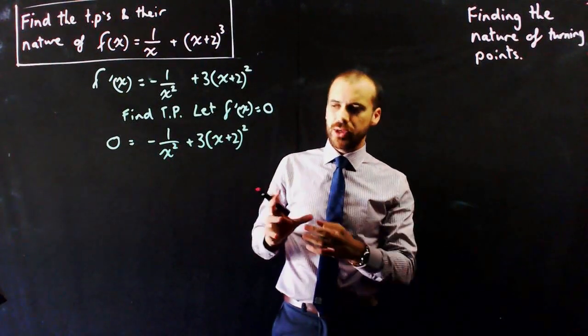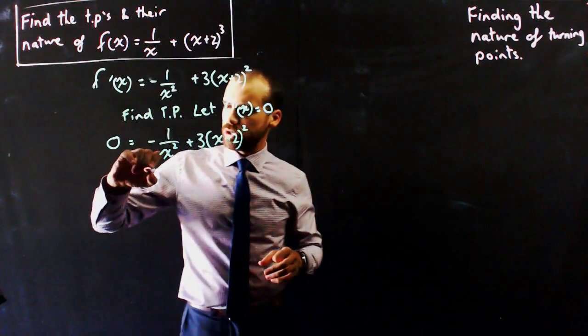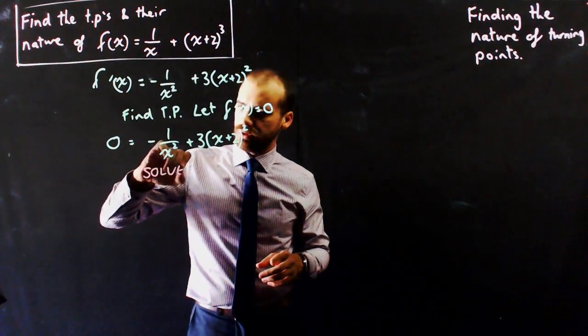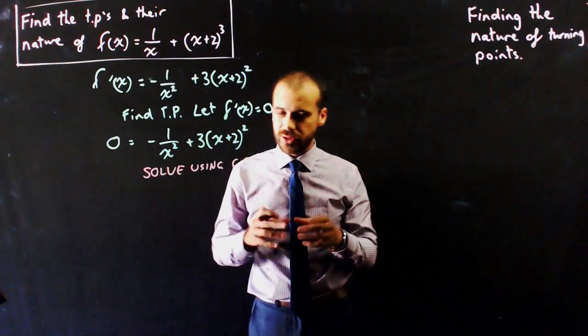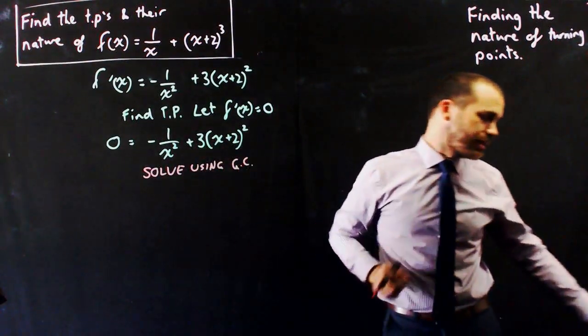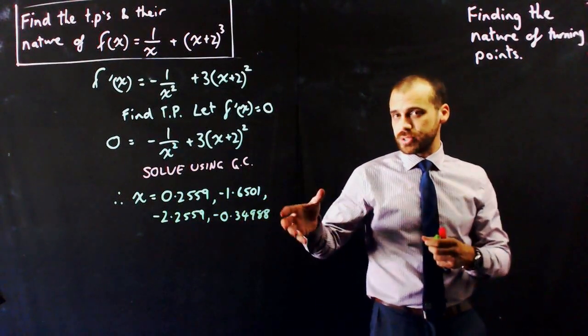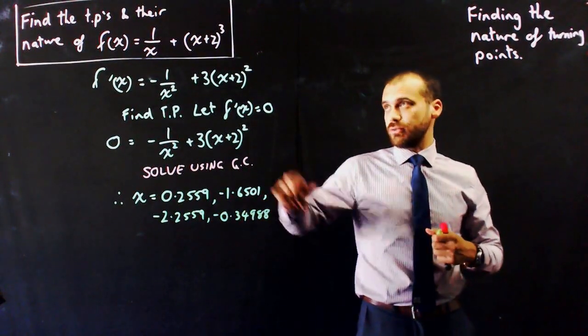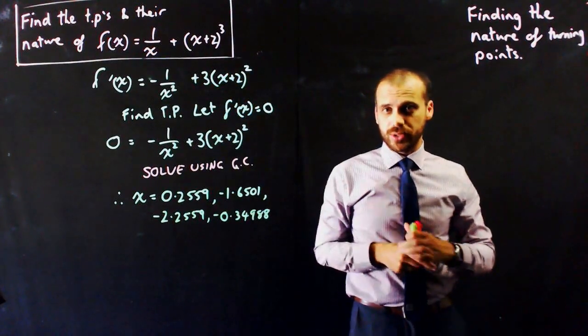Now that is far beyond our ability to solve algebraically, so we can just solve using the graphics calculator. So put it into the equation solver. If you don't know how to do that, you need to come and see me. So now I have four answers, and those four answers represent the x value of the turning points of this. So this thing's going to have four turning points.